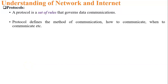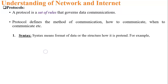Internet protocol defines the method of communication — how to communicate, when to communicate, etc. For example, one PC is located in network X and another PC is located in network Y. When these two PCs communicate across different networks, how they connect, how they communicate, and how data is transferred — all of this is defined by the protocol.